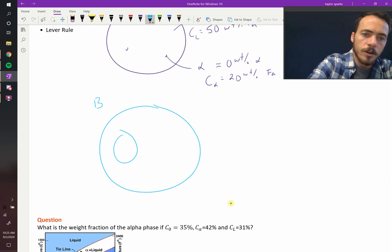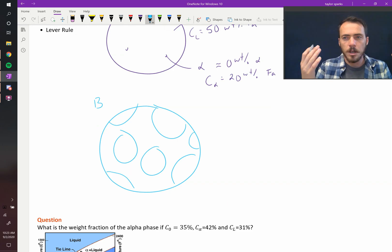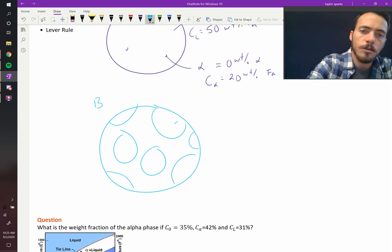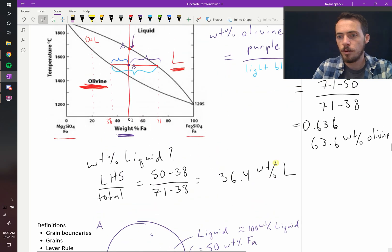The solids would have started to form and grow until they're about two-thirds. So I don't know if we've drawn two-thirds there, but that's maybe about right. So this would be our alpha phase. We would say that it is the weight fraction, the weight percent of alpha equals, we solved it up here, 63.6.